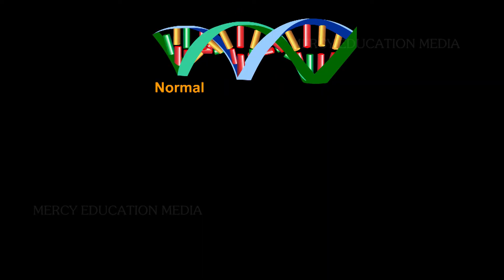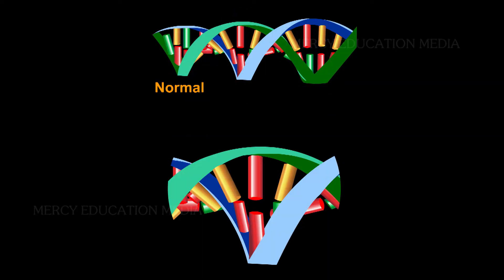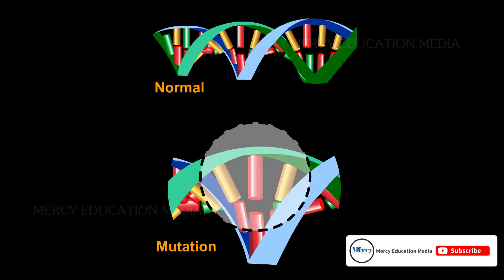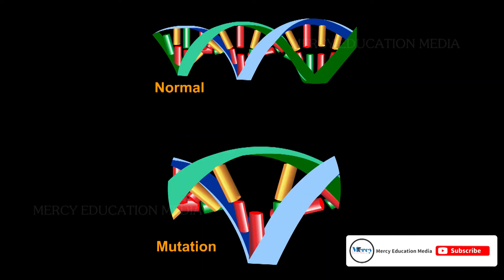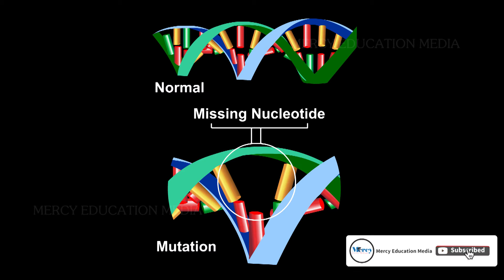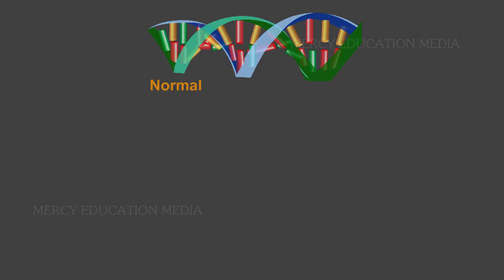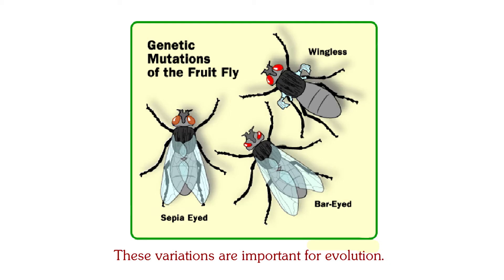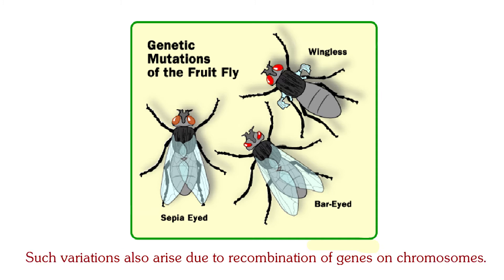When a gene undergoes changes due to mutation, it results in biological variations. These variations are important for evolution. Such variations also arise due to recombination of genes on chromosomes.